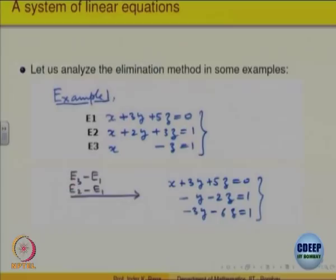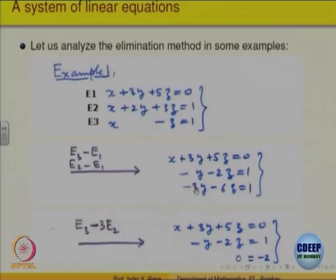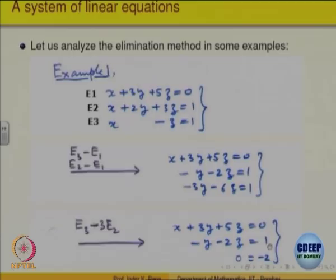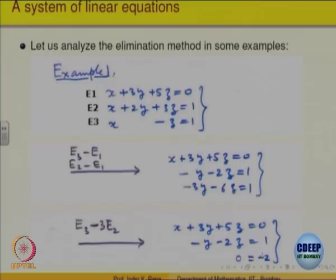We have eliminated variable x and obtained a reduced system. From those two equations, we eliminate another variable using operation e3 − 3e2. This gives an equivalent system because we have only taken linear combinations. The solution of the last system should be the same as the solution of the original. But in the last system we get the equation 0 = −2, which is absurd. That means this system has no solution. That is algebraically solving — this system has no solution.